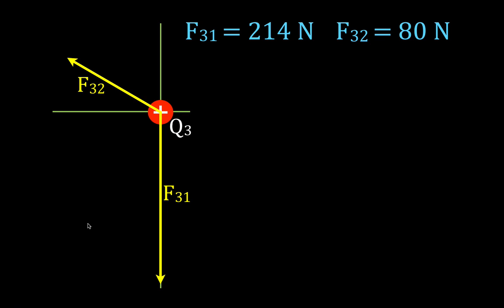We know, as we figured out in the previous slide, F31 is 214 newtons. F32 is 80 newtons. Now, I try to draw them a little bit to scale. This one is obviously longer than this one. This force is directly on the y-axis. This force is acting between the x and the y-axis, and that means we have to break this vector, decompose this vector into its x and y components. So this vector, F32, has a component in the y direction, and it also has a component in the x direction. F32y and F32x. And we're going to use our trig functions to decompose this vector.